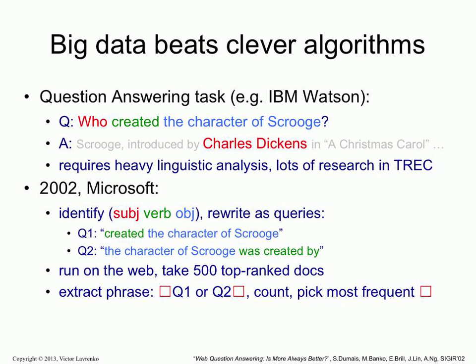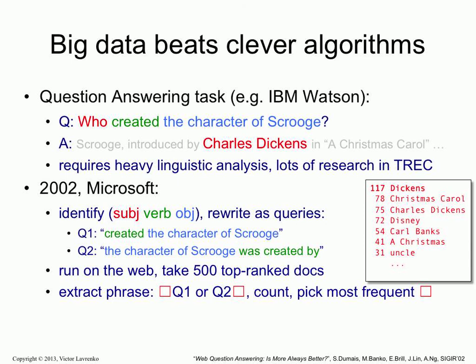On the web you get lots and lots of results. They get the top 500 snippets from the web and then extract phrases that occur either before query one or after query two — just a bigram or unigram before or after those strings. You can start counting how many times you saw a particular phrase before or after the string. So Dickens occurs 117 times, Charles Dickens 75 times, Disney 72 times, and so on. They pick the most frequent phrase and return that as the answer to the QA task.